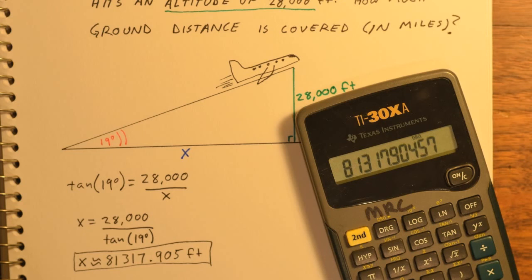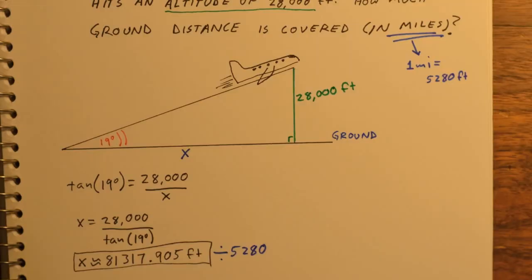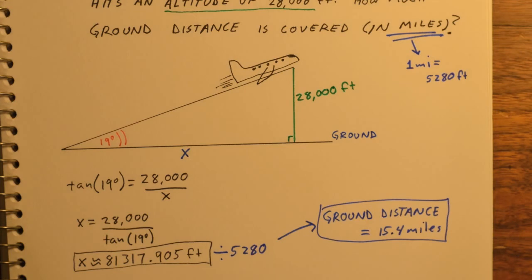However, the question asked us for ground distance covered in miles. Remember one mile is 5,280 feet. So we'll take our x answer and divide by 5,280, and we get that the ground distance is about 15.4 miles.